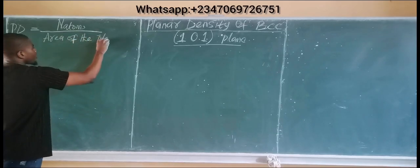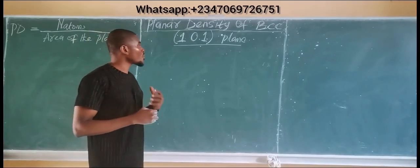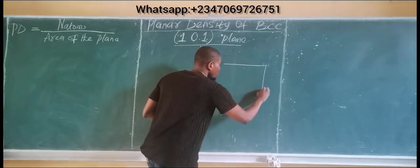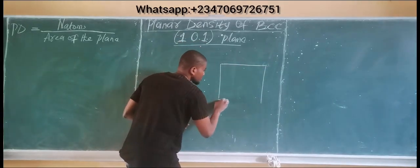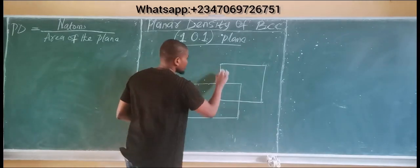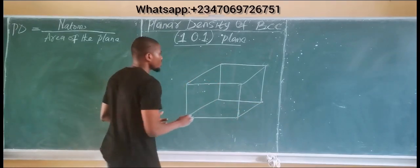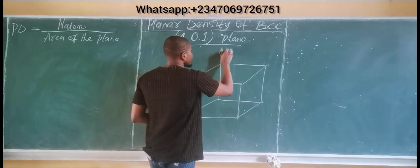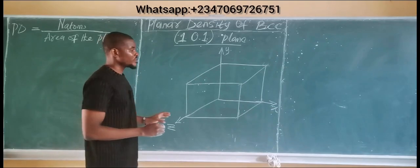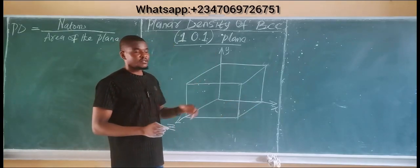We're talking about the body-centered cubic structure, plane 101. Let's start by plotting our simple cubic structure. Here are your y-intercepts, here your x-intercepts, and here your z-intercepts. These directions can be taken in any orientation — you can call them x, y, and z.